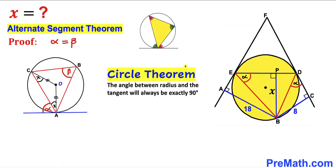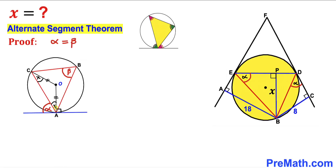Now let's recall the circle theorem: the angle between the radius and the tangent will always be equal to 90 degrees. In our case, OA is the radius and this is the tangent line, so this angle has got to be 90 degrees, and therefore this other angle is 90 degrees as well. We can observe that angle x and angle alpha together equal 90 degrees.